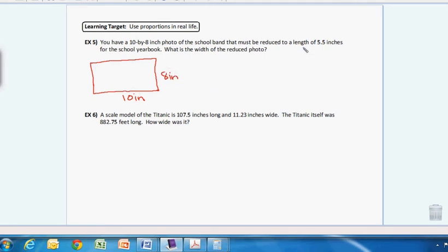So we have a 10 inch picture by 8 inches. And then it wants to be reduced for the yearbook so that it's 5.5 inches. And that's the length. And we don't know the width. So you can label that X, you could label that W, whatever you like.